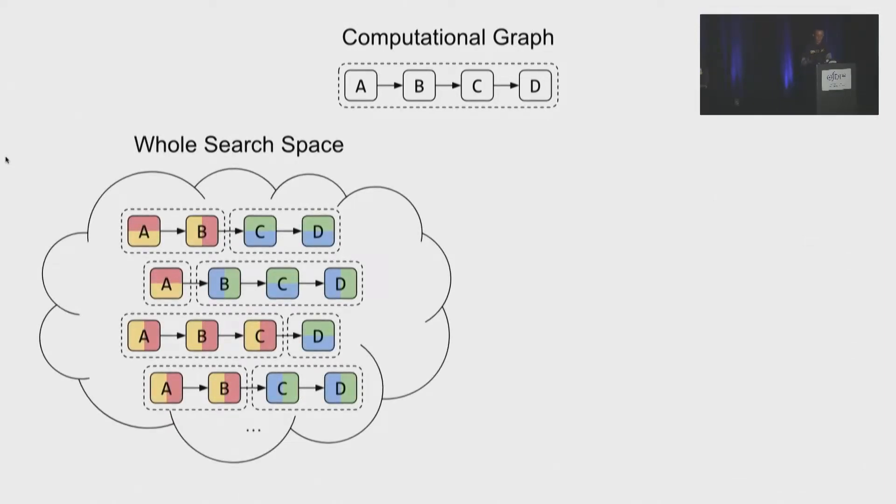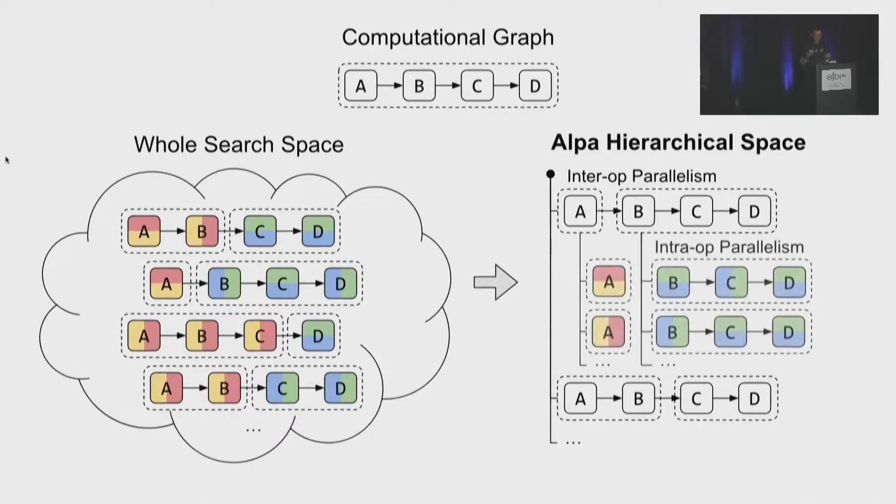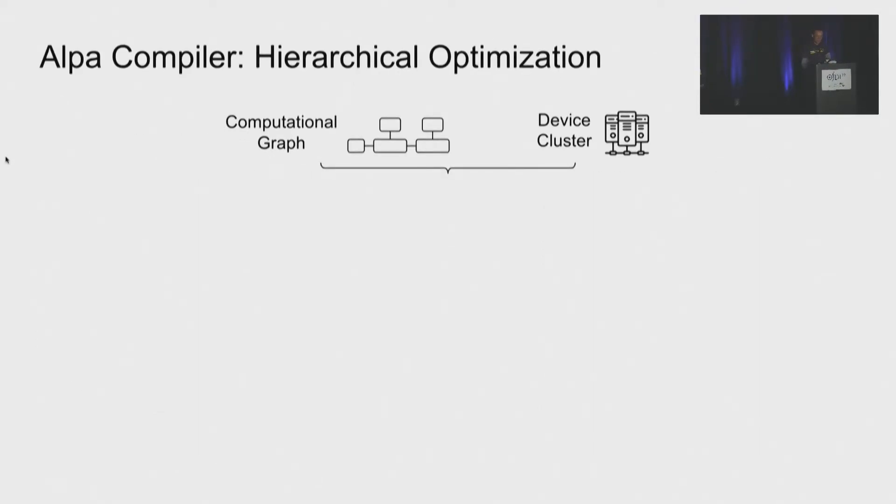So given an input computation graph, the whole parallel strategy search space of this graph is a complex space that involves all kinds of inter and intra-operator parallel strategies as shown here on the slide. So previous works failed to find a single unified algorithm to derive a good parallel strategy from the whole space. And in Alpa, the key to make this problem solvable is a decoupling and a reorganization of the search space. More specifically, we search for inter-operator parallel plan at the first level. And at the next level, we derive the best intra-operator parallel plan for each stage of the inter-operator parallel plan.